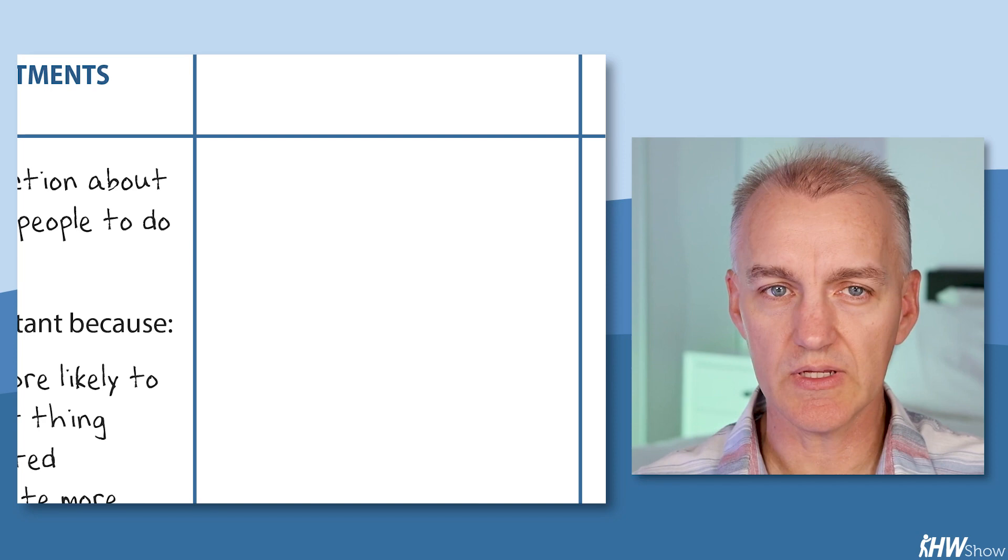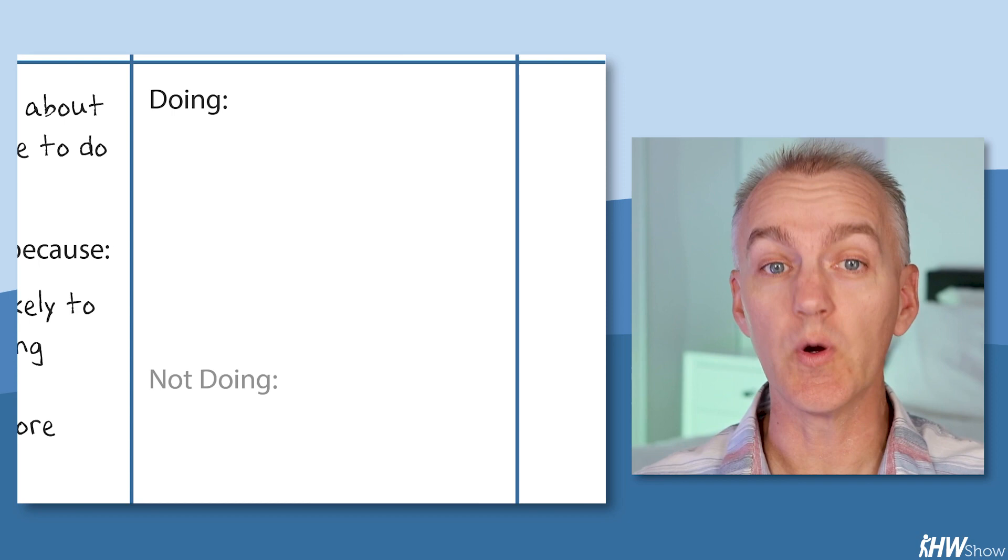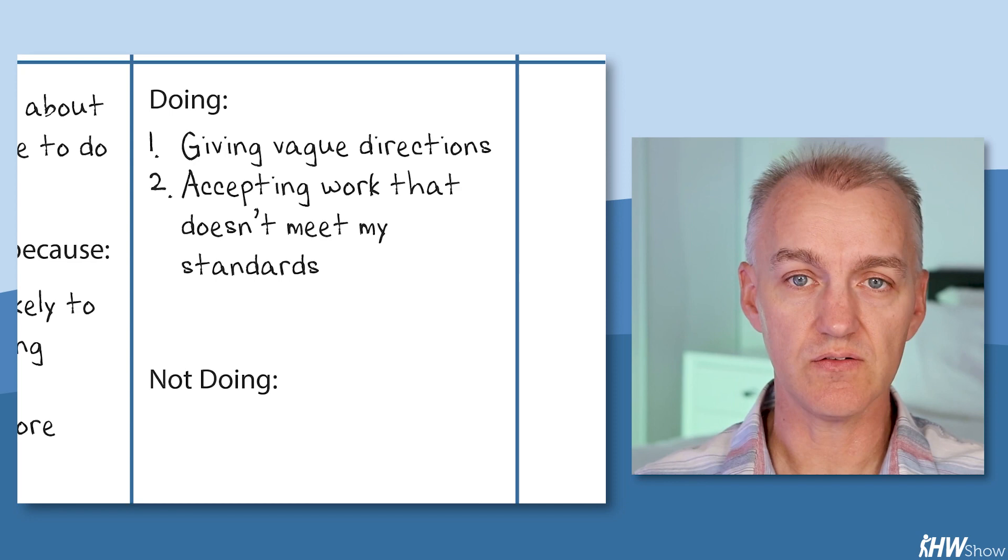Column two is what am I doing and what am I not doing? These are all the things that are going against that change goal. Column two is where we tell on ourselves. What are we doing or avoiding doing that's screwing up our change goal? In this case, the leader was giving vague directions, they weren't checking for understanding, and they were accepting work that wasn't really what they wanted to see.